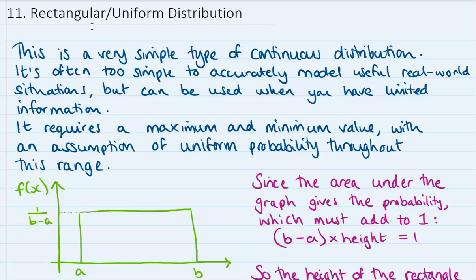So this type of probability distribution is actually quite an oversimplified one and it's used for continuous data. In real situations, it's actually pretty unuseful because it is so simple.